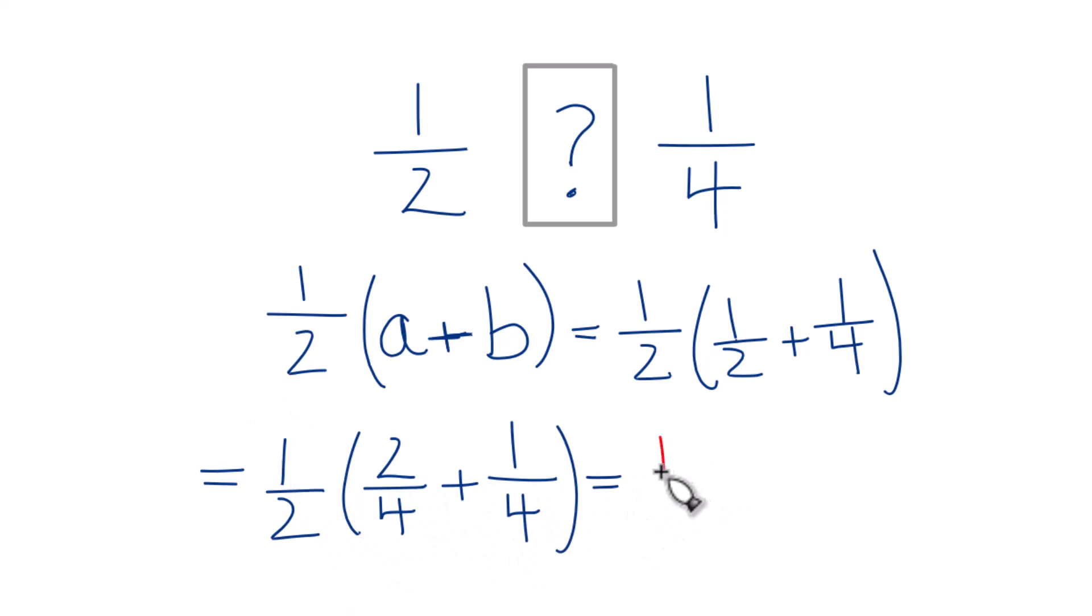So we have our 1 half out here. We add the numerators. 2 plus 1 is 3. And then we bring the denominators across because they're the same.